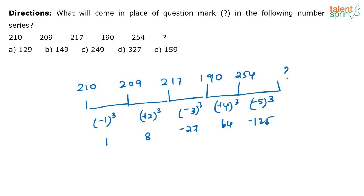So the next one will be 254 minus 5 cube, correct? That is 254 minus 125. So that will be the answer that you are looking at which is 129. So the correct answer for this question is option A.